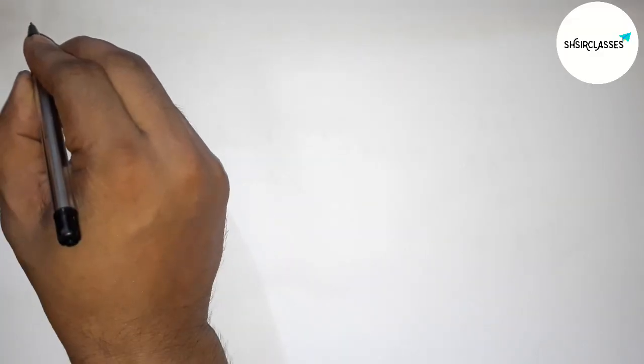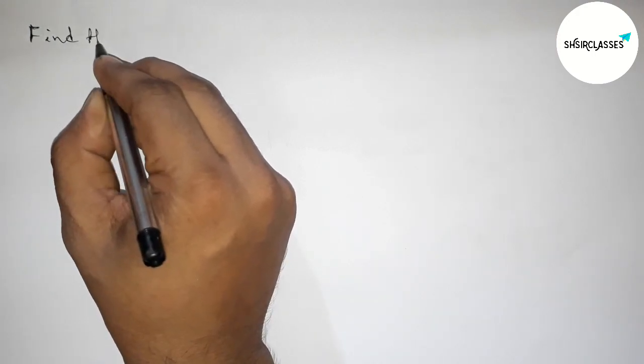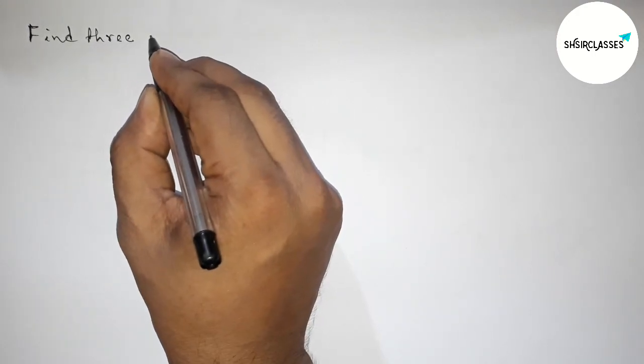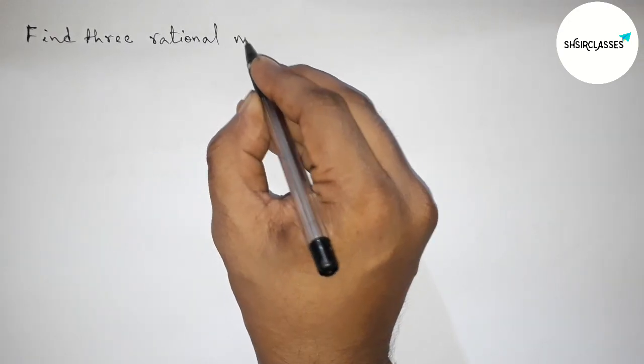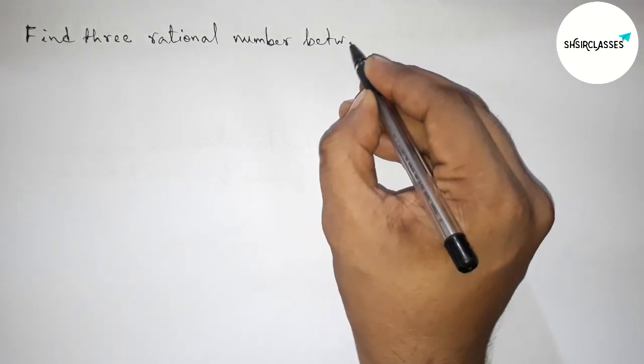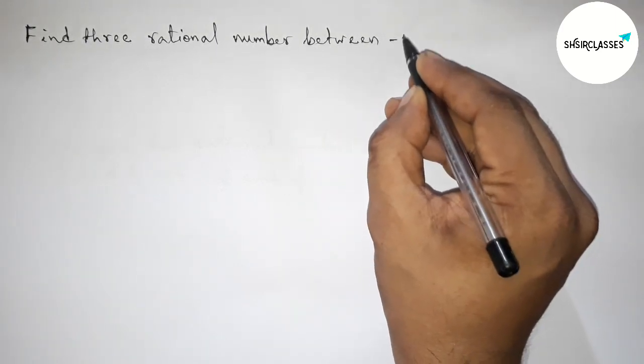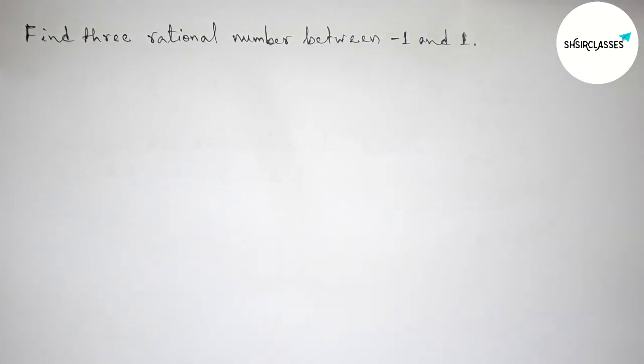Hi everyone, welcome to SI Share Classes. Today in this video we have to find three rational numbers between minus one and one in an easy way. Please watch the video till the end, so let's start.